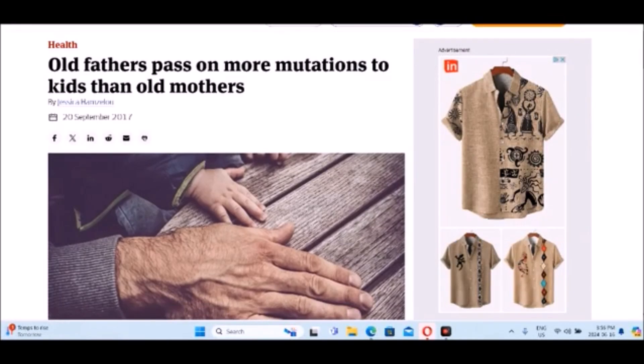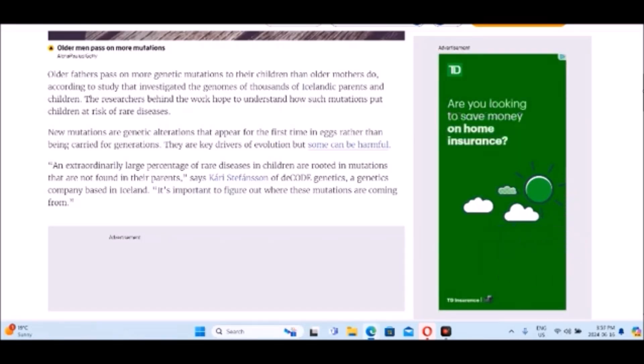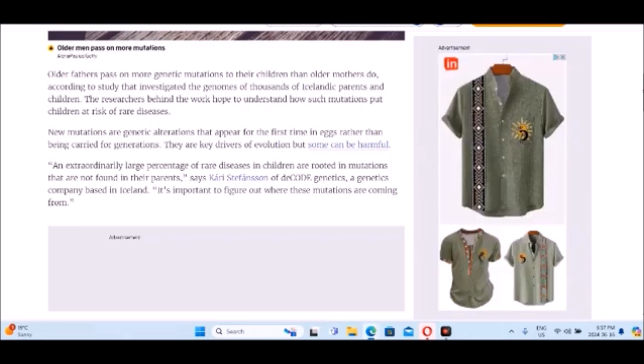The first article is from newscientist.com. It was written in 2017 and it's called Old Fathers Pass on More Mutations to Kids Than Old Mothers. It reads: Older fathers pass on more genetic mutations to their children than older mothers do according to studies that investigated the genomes of thousands of Icelandic parents and children. The researchers behind the work hope to understand how such mutations put children at risk of rare diseases. New mutations are genetic alterations that appear for the first time in eggs rather than being carried for generations. They are key drivers for evolution but some can be harmful. Kari Stefansson of Deco Genetics, a genetic company in Iceland, says an extraordinarily large percentage of rare diseases in children are rooted in mutations that are not found in their parents. It's important to figure out where these mutations are coming from.